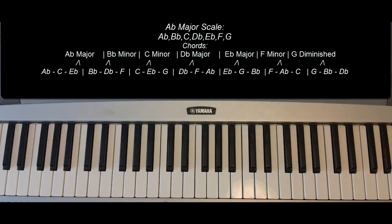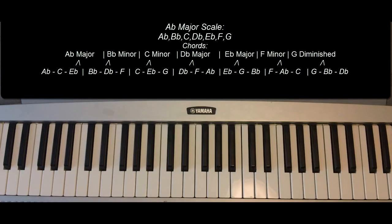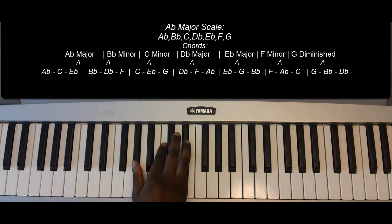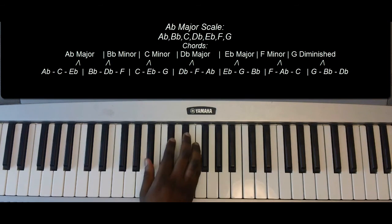A-flat major scale. So the chords of the A-flat major scale are as follows. A-flat major: A-flat, C, E-flat. B-flat minor: B-flat, D-flat, F.